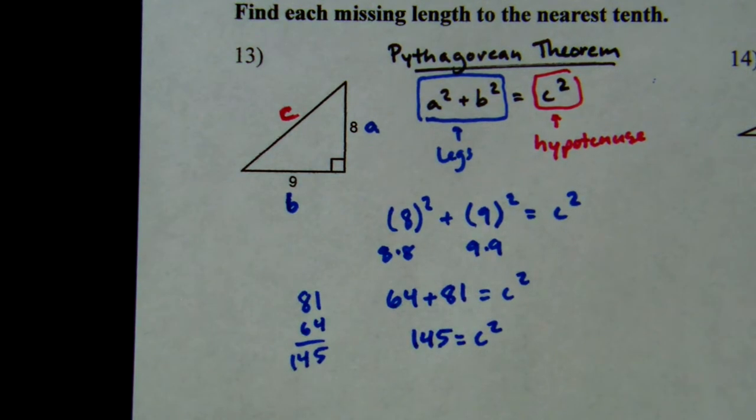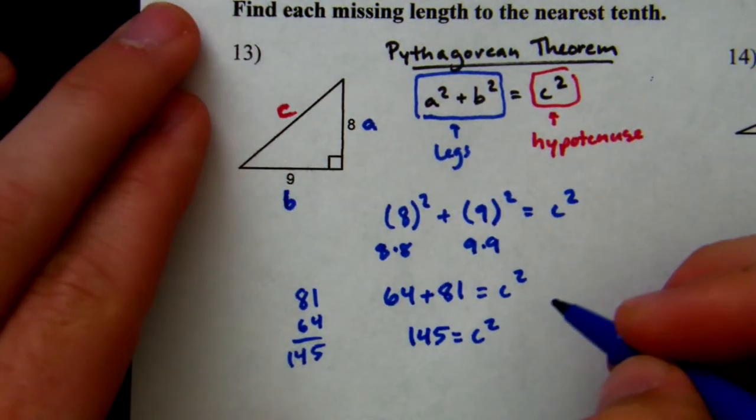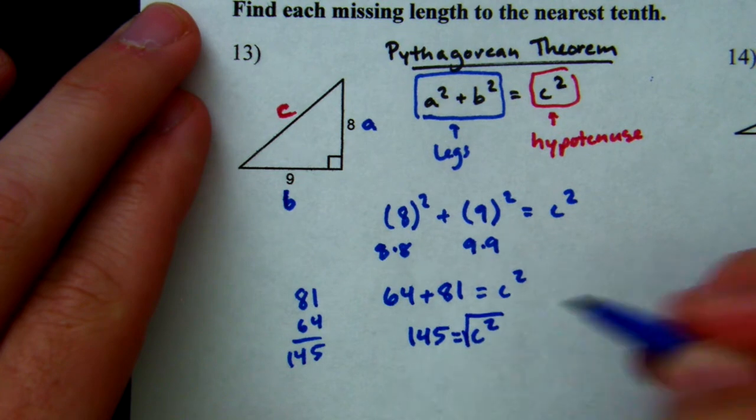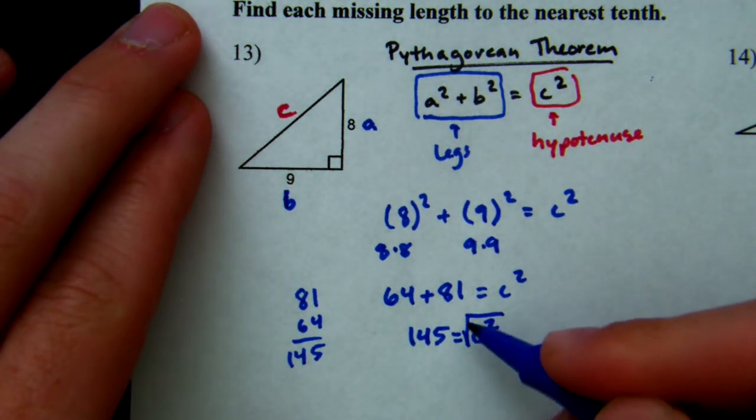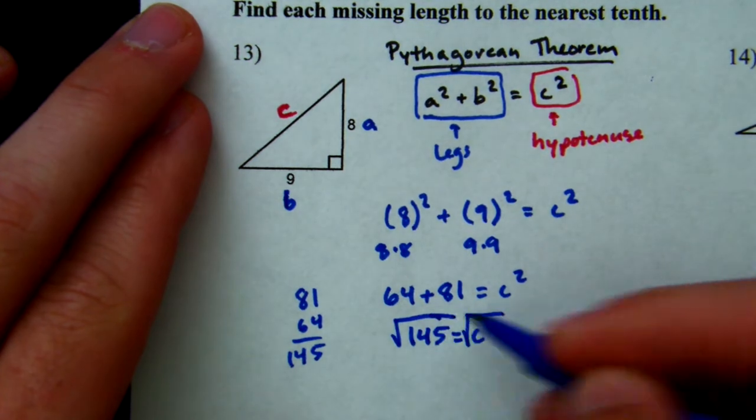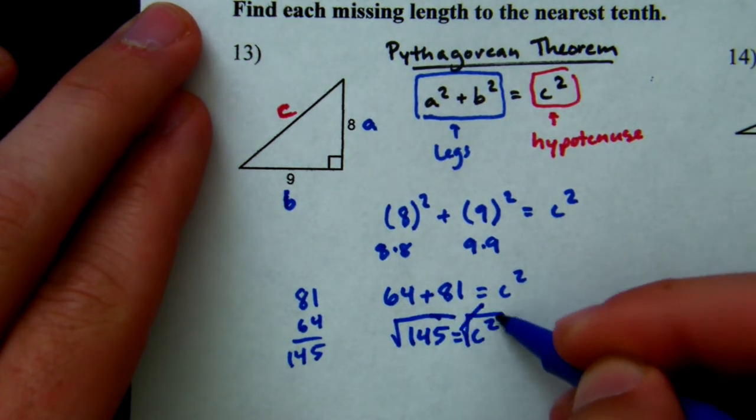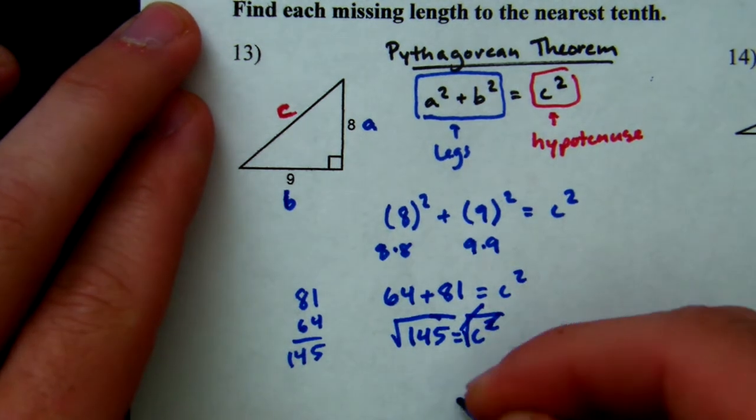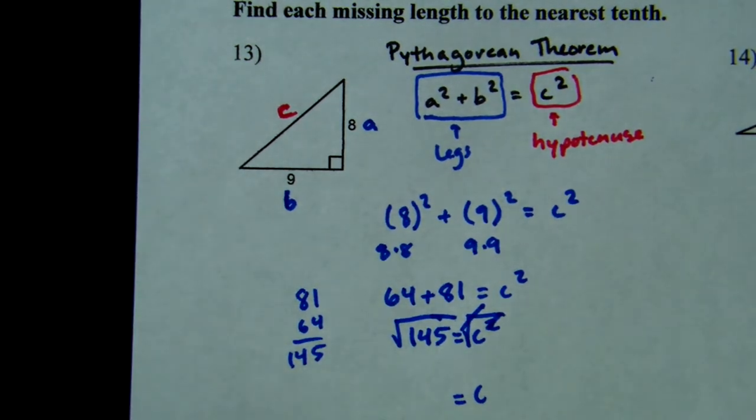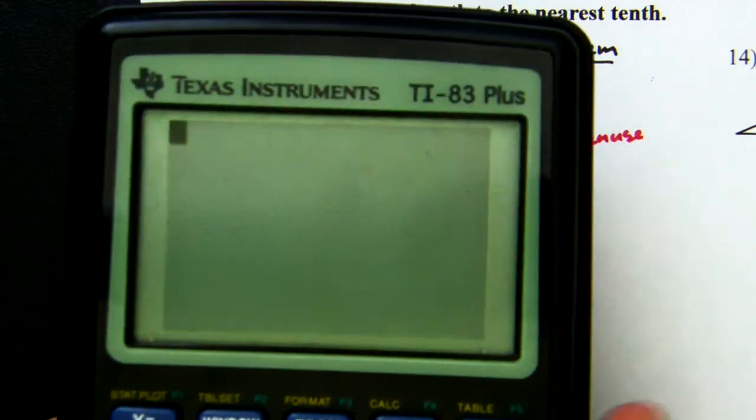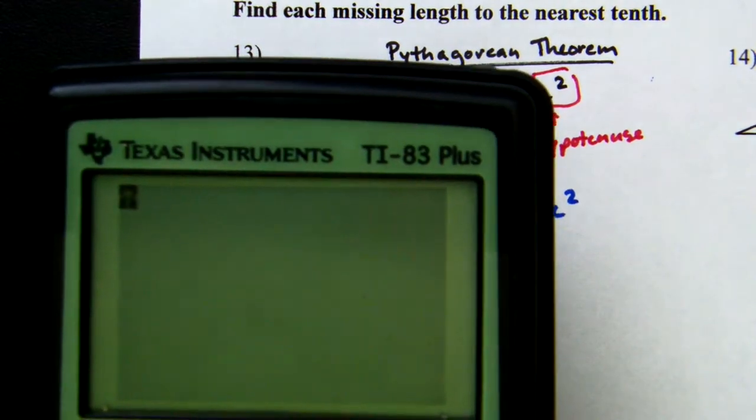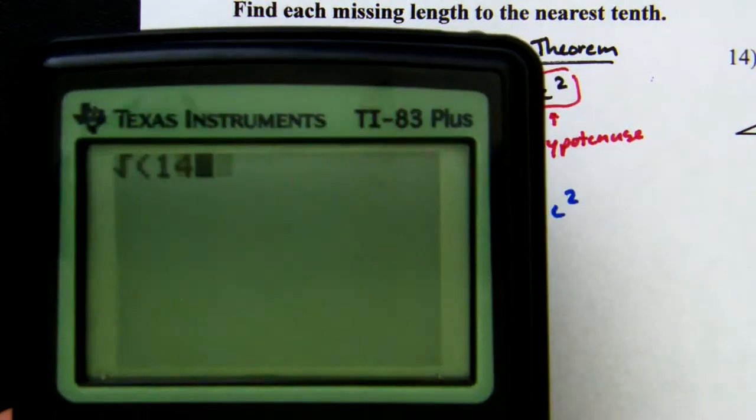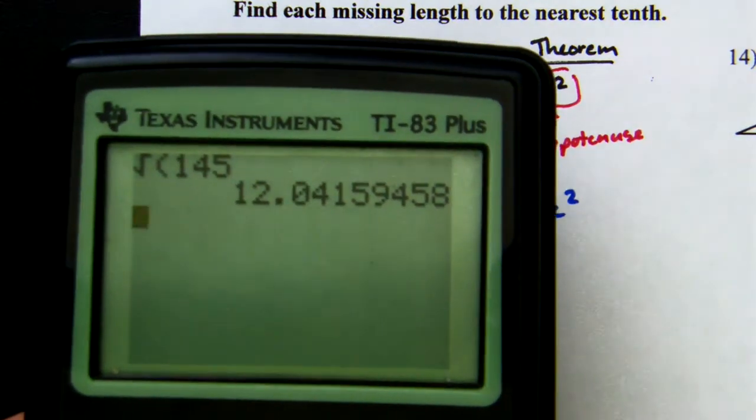Now, to get c by itself, we have to do the opposite of what's being done to it. So it is being squared. So the opposite of a square or a 2 exponent is going to be what we call a square root. So to get rid of this, we have to square root. And whatever we do to one side, we have to do to the other. So on the right side, the square root and the square cancel out. So we're left with c equals the square root of 145. What number times itself equals 145? So what I'm going to do is I'm going to take my calculator. And each calculator is different. But for my calculator, I'm going to find the square root of 145. And that's going to give me an answer that looks like this.